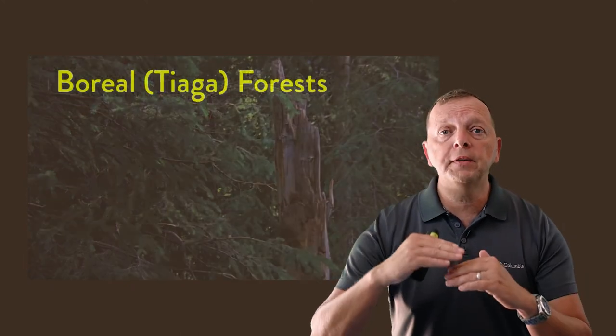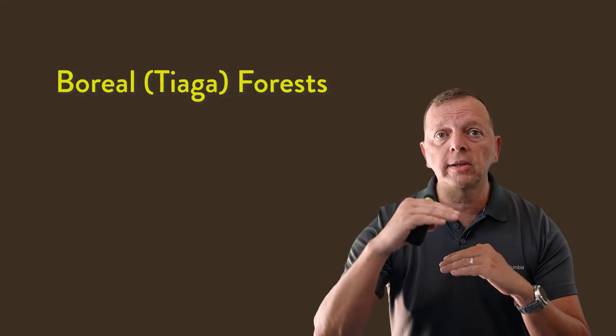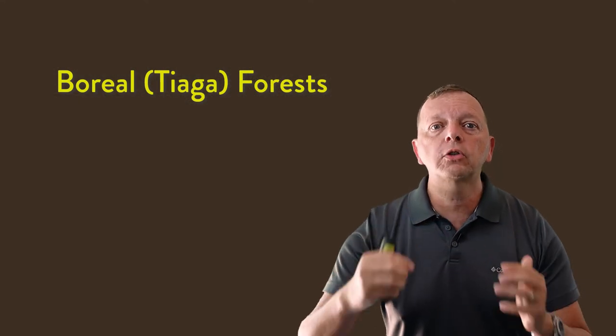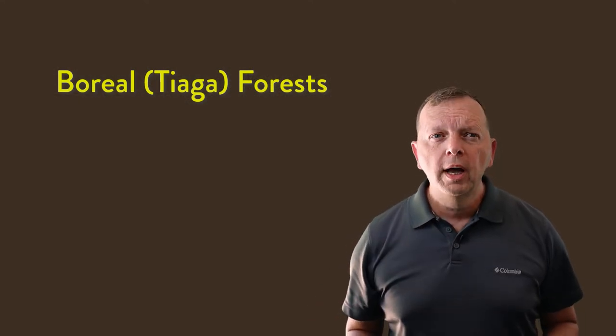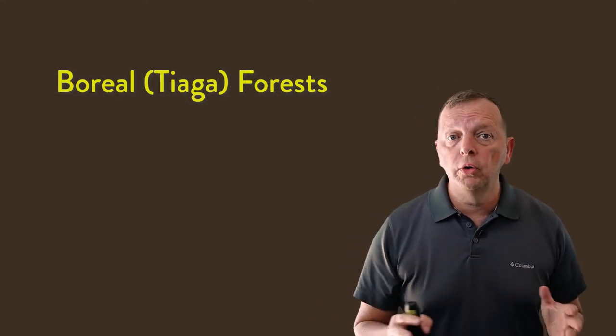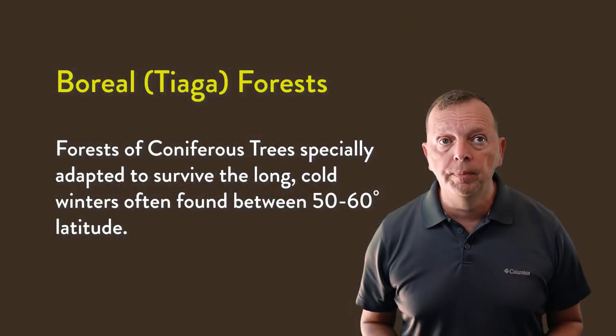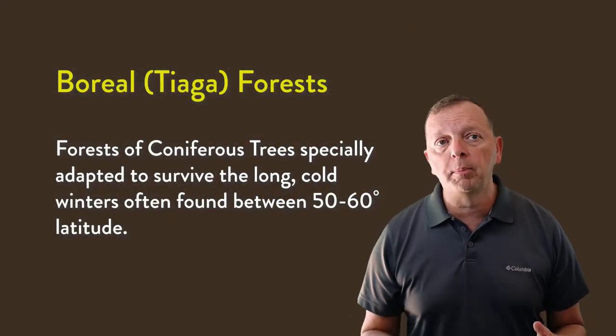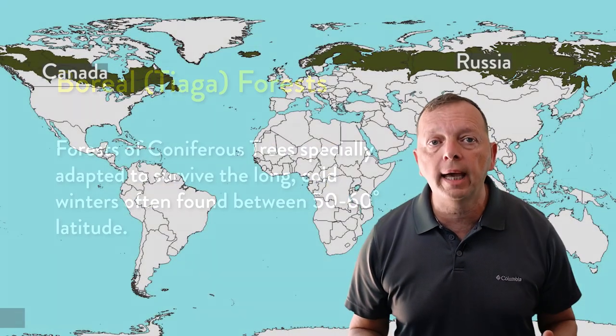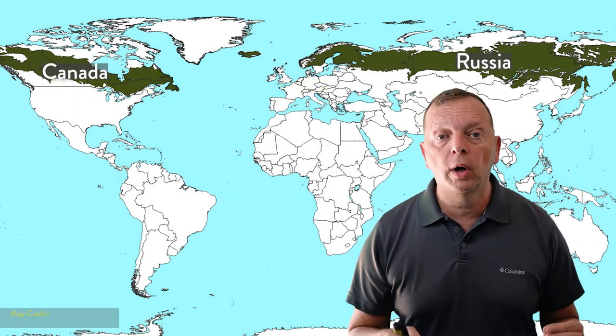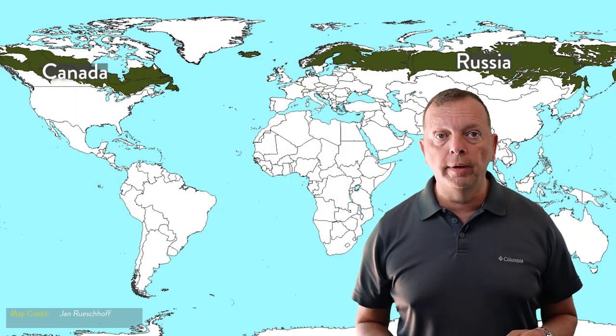As you move between 50 and 60 degrees latitude, we start seeing boreal forests, also known as taiga forests, which are made up of coniferous trees specially adapted to survive the brutal winters of that latitude. A perfect example of boreal forests is found in Canada and in Russia's Siberian Plain.